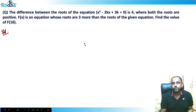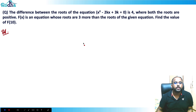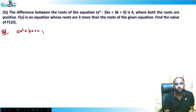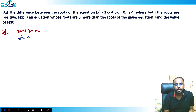Let's look at this next question. The question says that the difference between the roots of the equation x² - 2kx + 3k = 0 is 4, where both roots are positive. f(x) is an equation whose roots are 3 more than the roots of the given equation. Find the value of f(10). So the original quadratic equation form is ax² + bx + c = 0, on which all the formulas are based. Comparing it to x² - 2kx + 3k = 0.